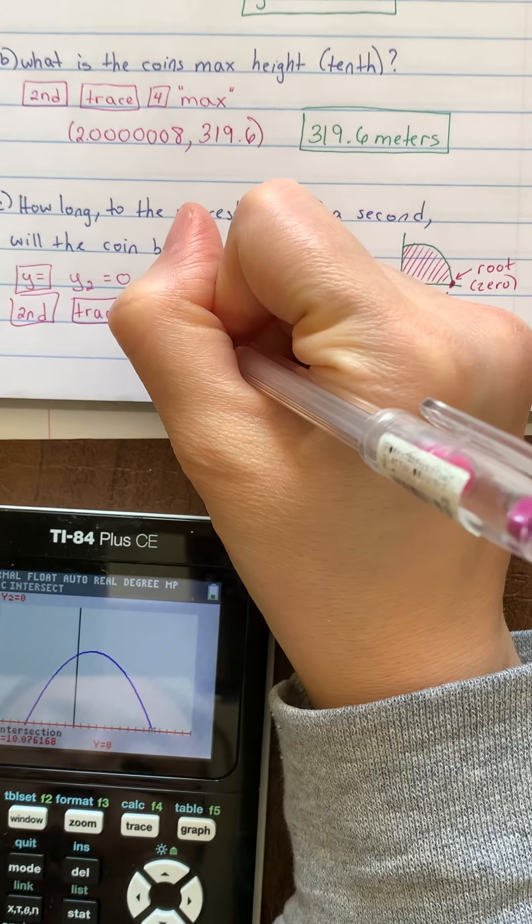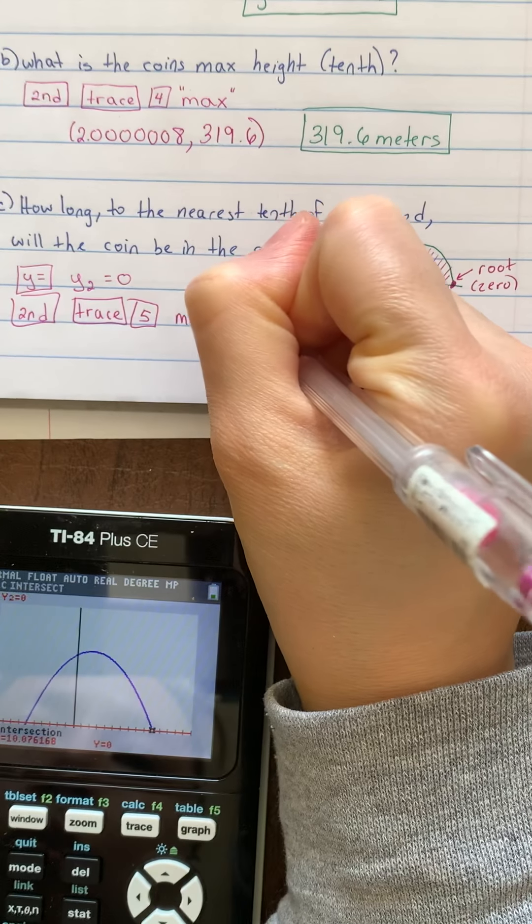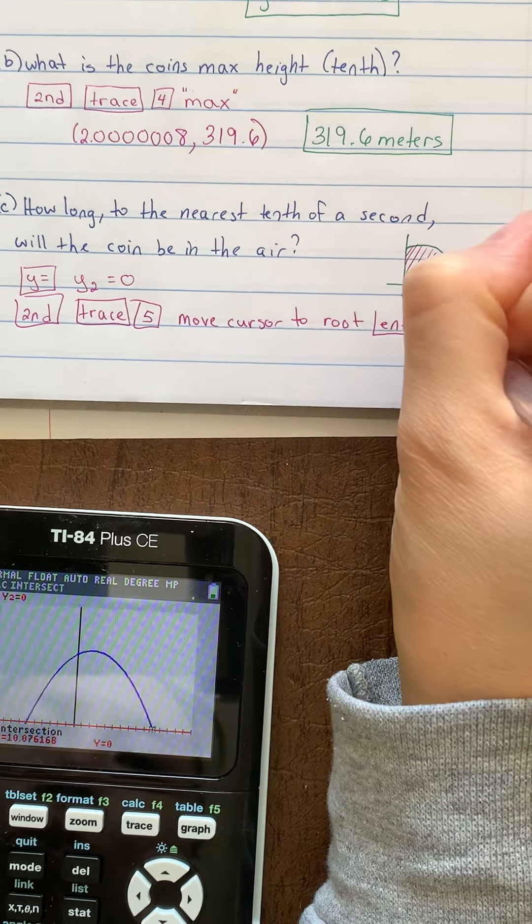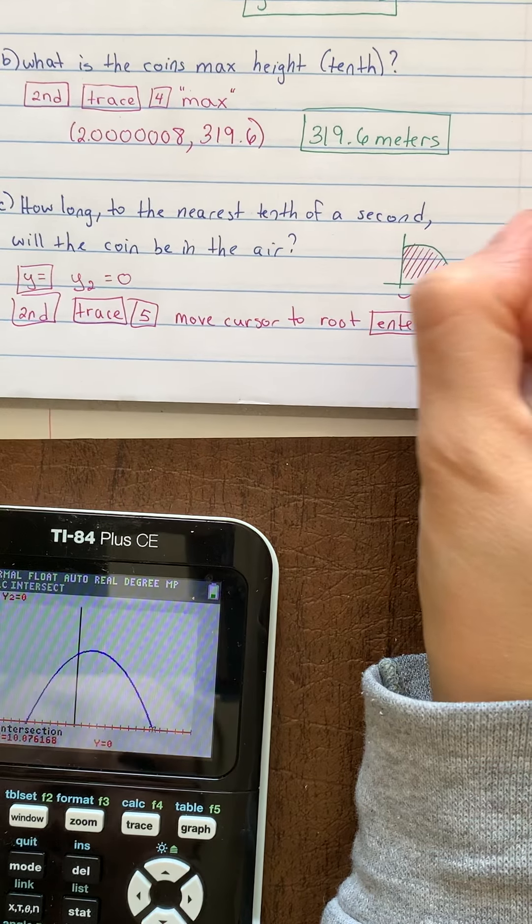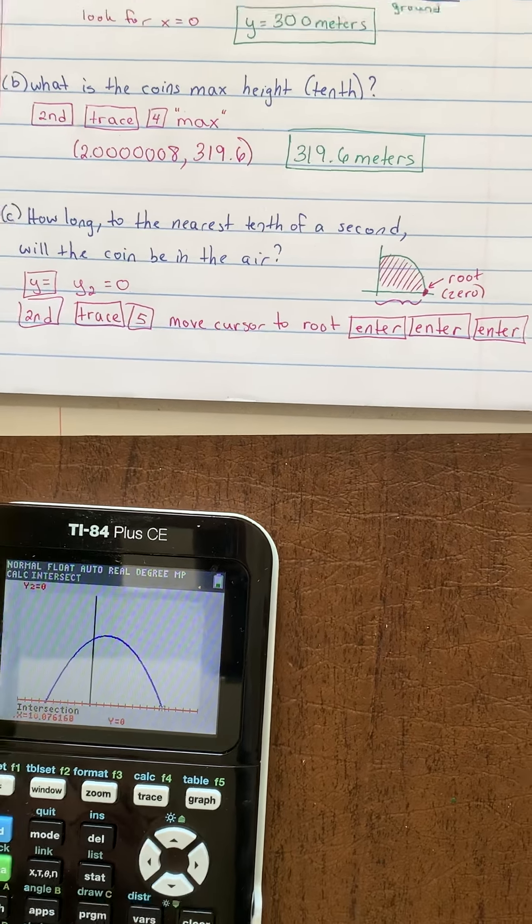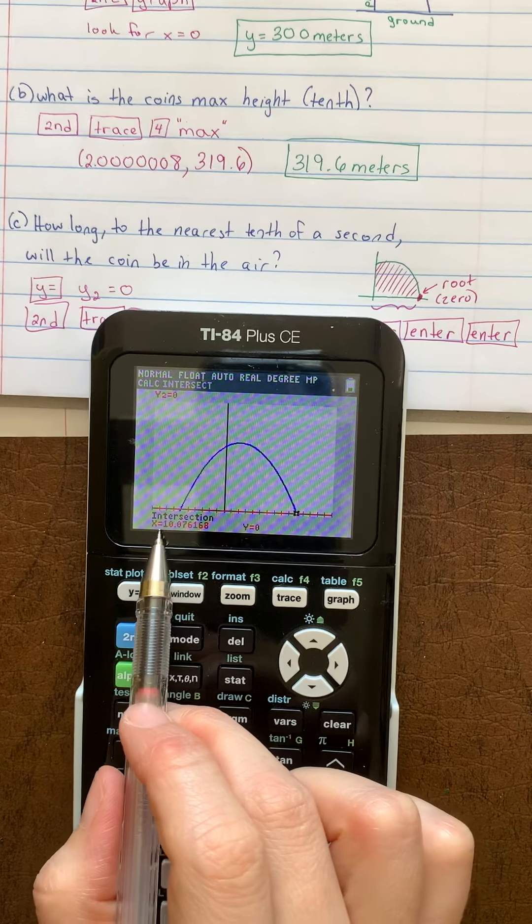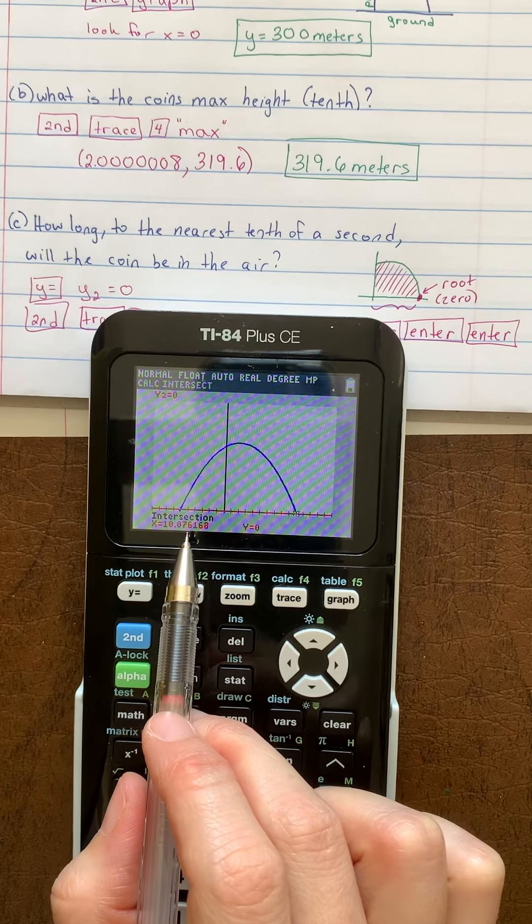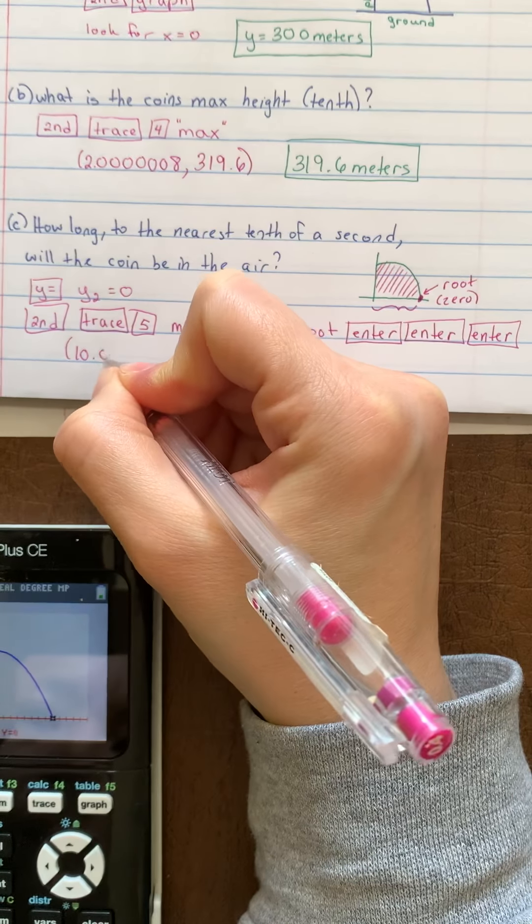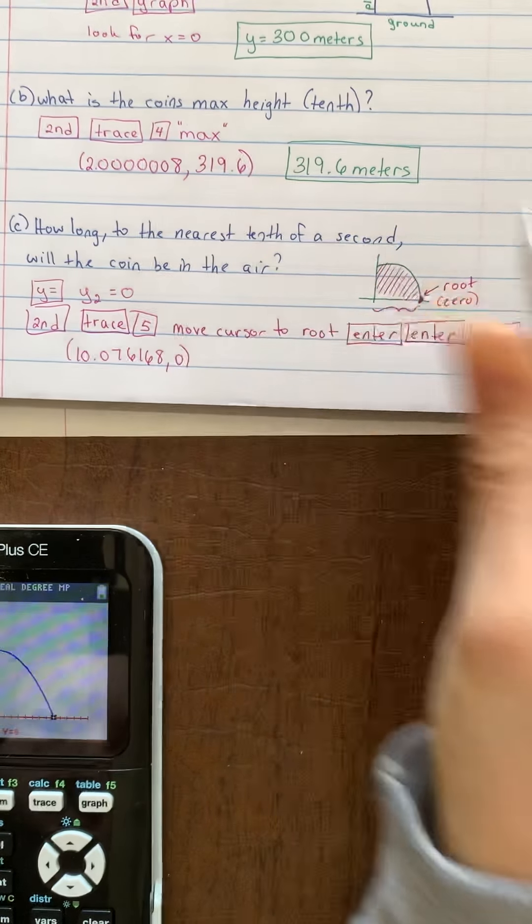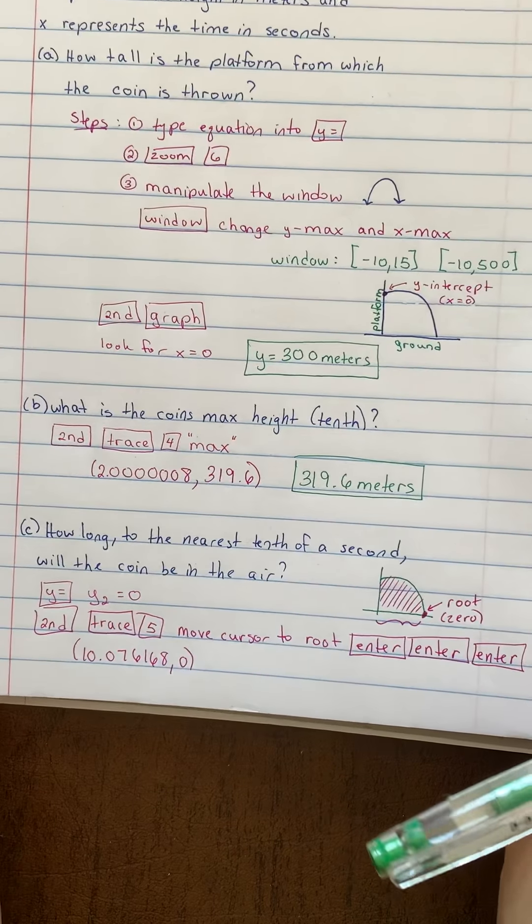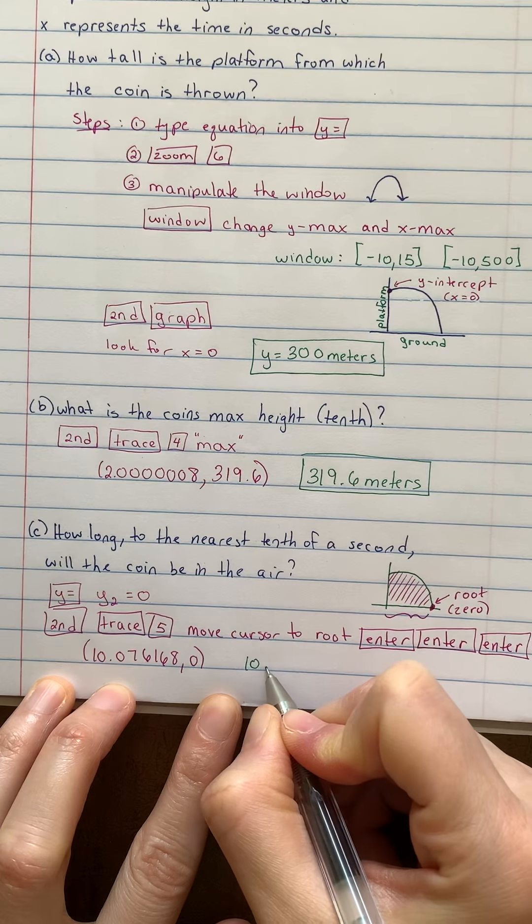Again, I'm going to write down what happened. Second trace choice five. I moved the cursor to the root. And then I pushed enter three times. And again, you want to push enter kind of slowly. If you push it too quickly, your calculator can't comprehend it that fast. It's not like your cell phones. You definitely have to give it a little bit of time to process. So push enter three times kind of slowly. And it should say the word intersection on your screen. If it does not say intersection, you went too fast. All right. So I'm going to write down my answer here. The intersection was 10.076168, 0. So to answer this question, it wants to know how long. So there's 10th of a second was the coin in the air. So the coin was in the air for 10.1 seconds.